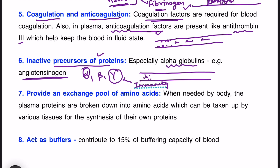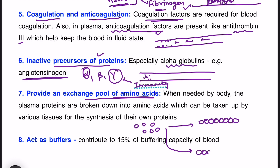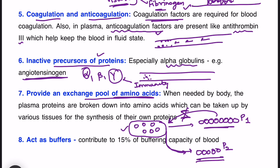The proteins also provide an exchange pool of amino acids. Amino acids combine to form protein chains, but these proteins can also break down back into amino acids that can be utilized for production of another protein. This is the exchange pool — the amino acid pool is being recycled. Some plasma proteins are being broken down while others are being synthesized, maintaining this amino acid pool.